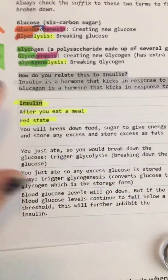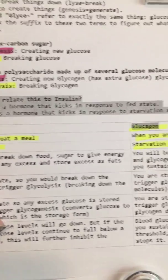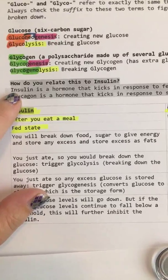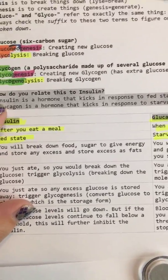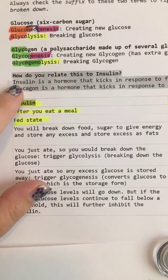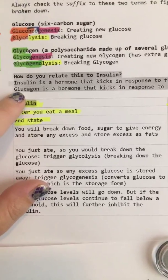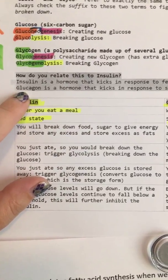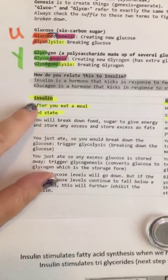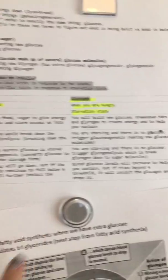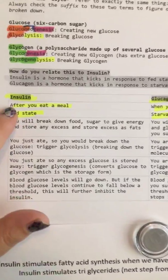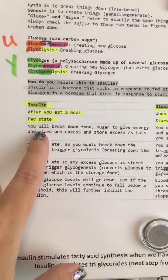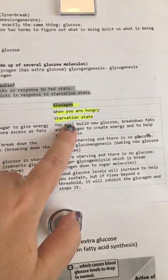Insulin is a hormone that kicks in in response to the fed state. This is why diabetics have to take it after they eat, because we're going to be dealing with the sugar that we're eating. Then glucagon is the hormone that kicks in in response to the starvation state. You can think of it as 'glucose is gone.' Insulin and glucagon are exactly opposite — insulin is after you eat a meal, where glucagon is when you're hungry.